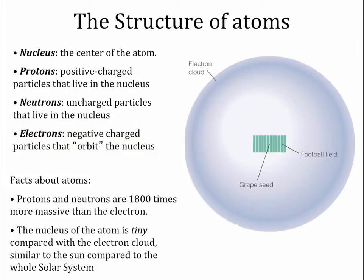You may have seen pictures that seem to show electrons orbiting the nucleus. They don't technically do that, but you can think of it that way. The true description requires quantum mechanics, and it's frankly very weird. Protons and neutrons are each 1800 times more massive than the electron, so all the mass of an atom is essentially in the nucleus. The nucleus is very small compared with the electron cloud, similar to the size of the sun compared with the whole solar system.